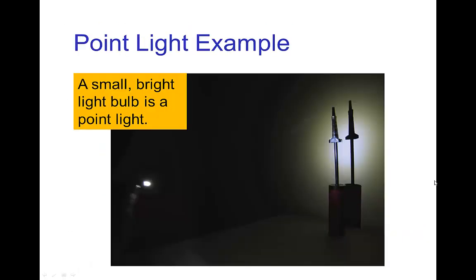Here's a photo of an example of something which is approximately a point light source. There's a small bright light bulb and you see the cast shadow from that light bulb is all umbra, it's all dark and sharp.